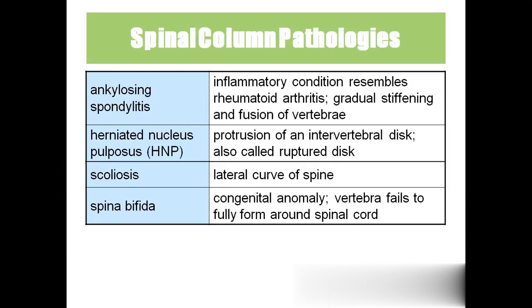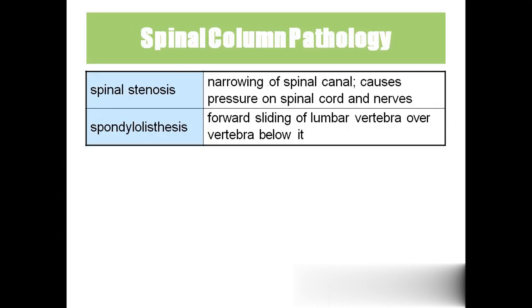Ankylosing spondylitis is an inflammatory disease similar to rheumatoid arthritis, causing stiffening of the entire vertebral column. Herniated nucleus pulposus (HNP) is protrusion of an intervertebral disc, also called a ruptured disc. Scoliosis is increased lateral curvature of the spine. Spina bifida is a congenital anomaly where the vertebra fails to fuse fully, leading to meningocele or meningomyelocele. Spinal stenosis is narrowing of the spinal canal. Spondylolisthesis is forward slipping of a lumbar vertebra over the adjacent one, causing pressure on the spinal cord.